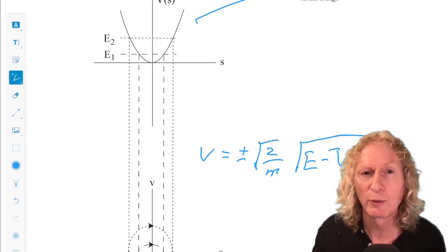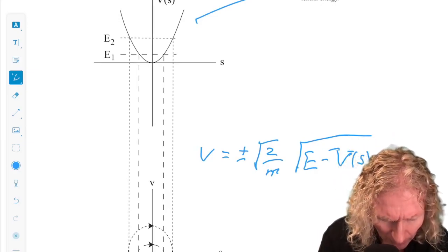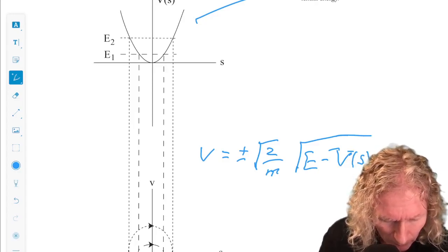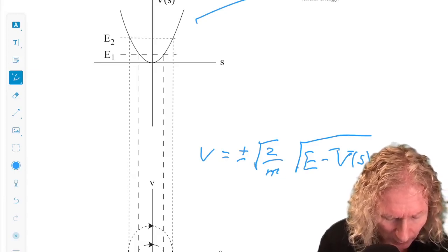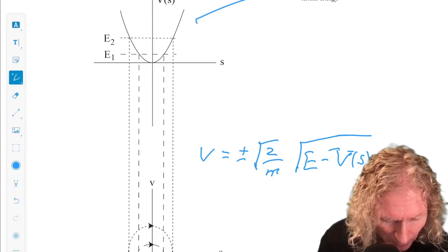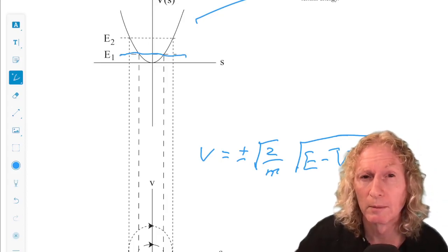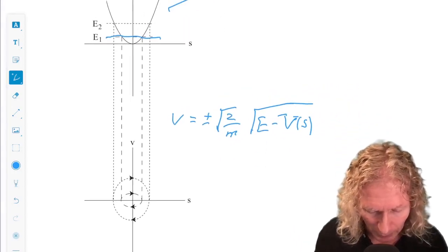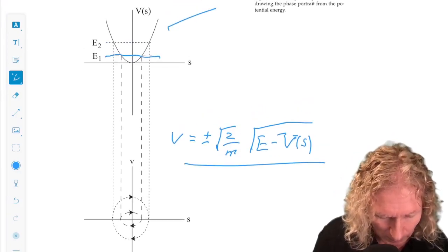So let's pick an energy, E. Let's call it E1 greater than zero. And let's plot the horizontal line on the V(s) axis corresponding to the chosen value of V that I pick. Keep in mind this relation, which I've written over here on the side.